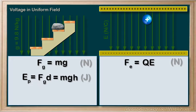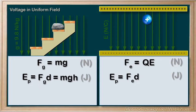Should look familiar. Switching over to our charged particle, the potential energy is Fe times d — the work required to get to this position from the bottom, or a reference. Since we're in a uniform field, we can replace Fe with q times e, the charge times our electric field. So we have q, e, d.